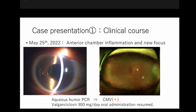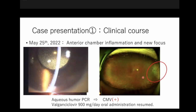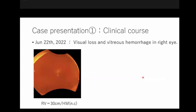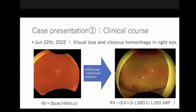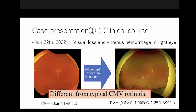Fluorescein fundus angiography revealed extremely extensive non-perfusion areas including the central fovea. Both the blood test and aqueous humor DirectStrip PCR were CMV positive, leading to a diagnosis of CMV retinitis. Considering renal function, an initial dose of 900 mg/day of oral valganciclovir was started. Pan-retinal photocoagulation was performed for non-perfusion areas, and oral valganciclovir was completed, but vitreous hemorrhage occurred one month later. Vitrectomy was promptly performed; no retinal detachment was observed, and the hemorrhage was attributed to retinal neovascularization from non-perfusion areas.